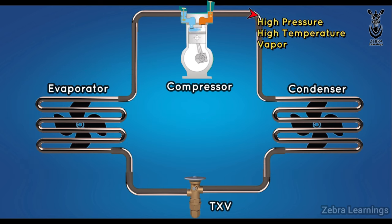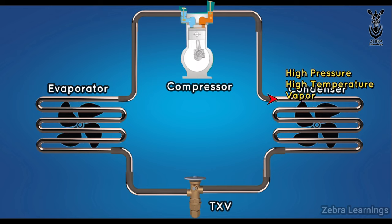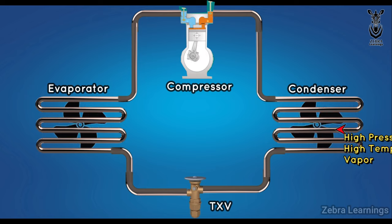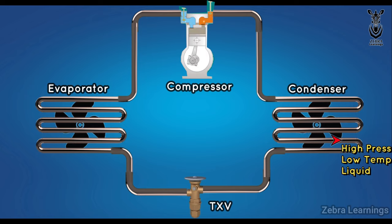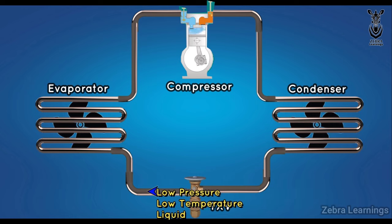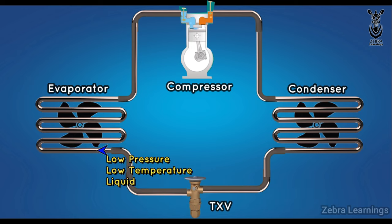We reduce the heat of the refrigerant in the condenser and pressure of the refrigerant in the expansion valve, which is coming from the compressor at high pressure and high temperature. With the help of the compressor, the refrigerant travels through the cycle.